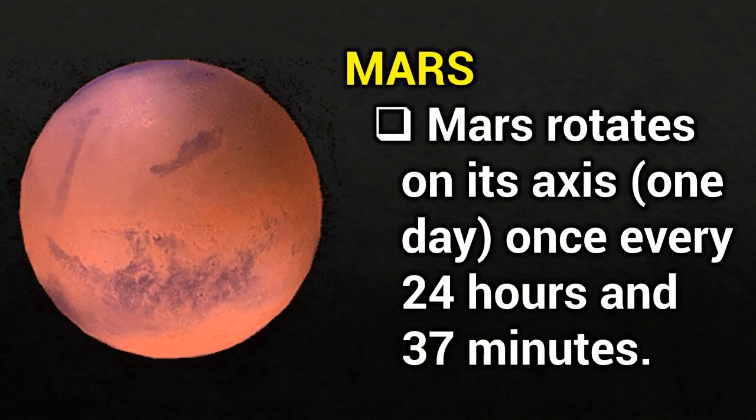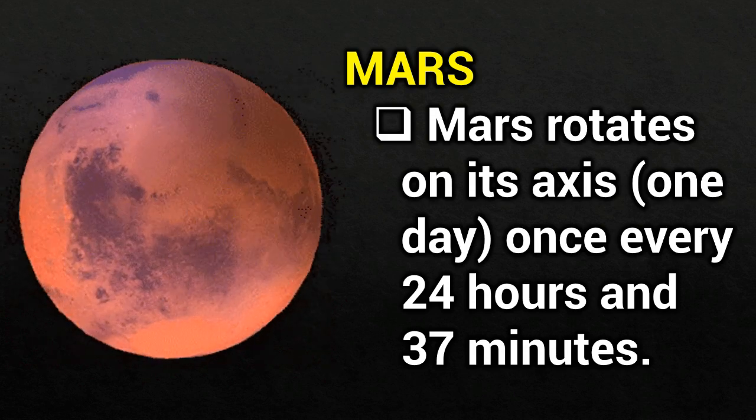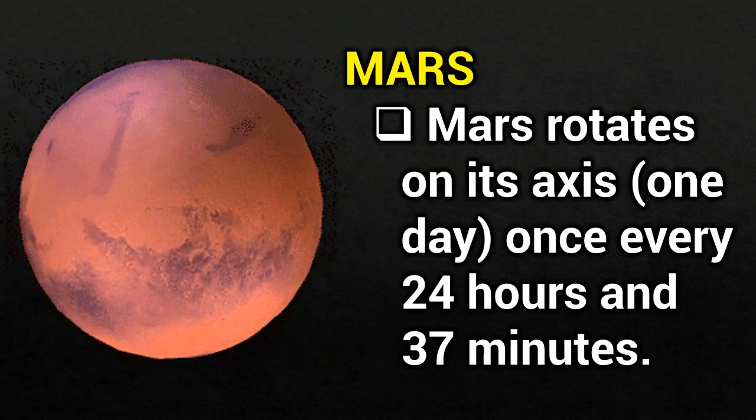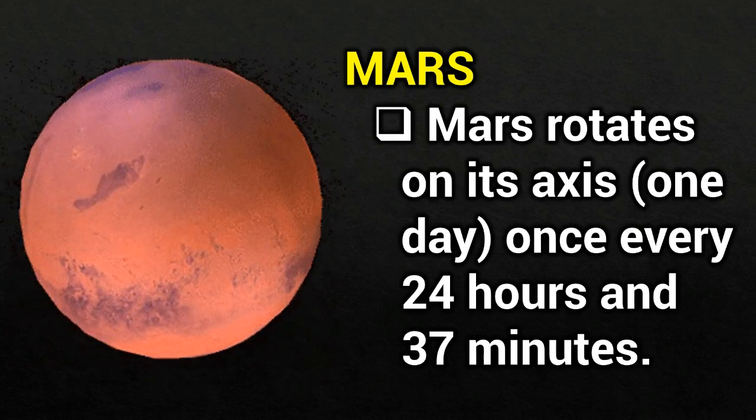Mars. Mars rotates on its axis once every 24 hours and 37 minutes.